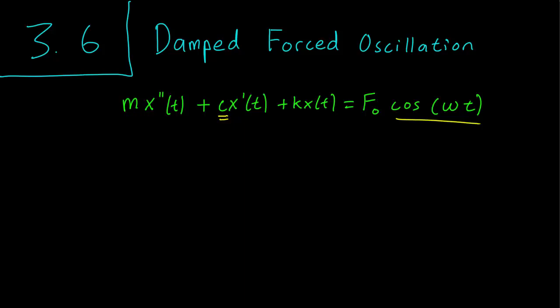So again we have to use the method of undetermined coefficients. We can write that x is equal to a cosine omega t plus b sine omega t. And we have to add the sine this time because we do have a x prime term.